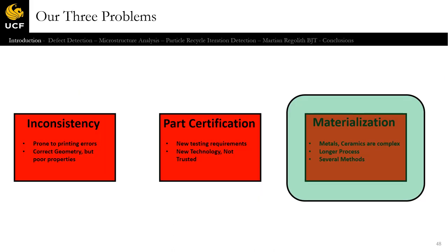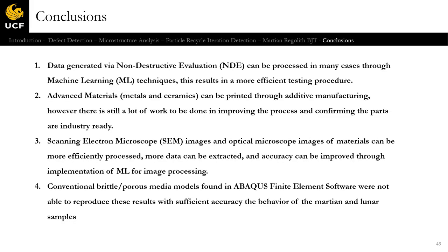We have now attacked all three problems through this work — the Martian and Lunar work most specifically towards materialization, being the development of a new material process using an existing 3D printing process. Overall, we have done our best at contributing to the world of advanced additive manufacturing, and the attack vector was through NDE and machine learning — the combination of those two.